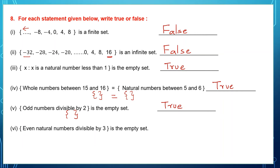Question 6: even natural numbers divisible by 3 is an empty set — is this statement true or false? Numbers divisible by 3 include 3, 6, 9 and so on. Among these, even natural numbers include 6, 12 and so on. The statement says this is an empty set, which is wrong because there are elements like 6 and 12. So this statement is false.